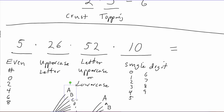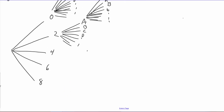Determining the total number is actually very easy. Since each of these decisions are completely independent of one another, we just count how many options we have for each decision and simply multiply them together to get the total number.